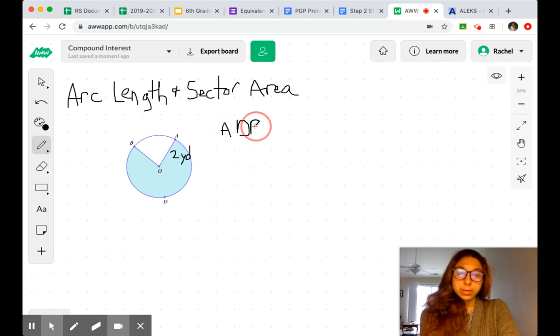When we write it in formal notation, we have our m here, but instead of doing an angle, we draw an arc over it. This means the measure of the arc length. We also want to find the area of the sector, so our shaded area.